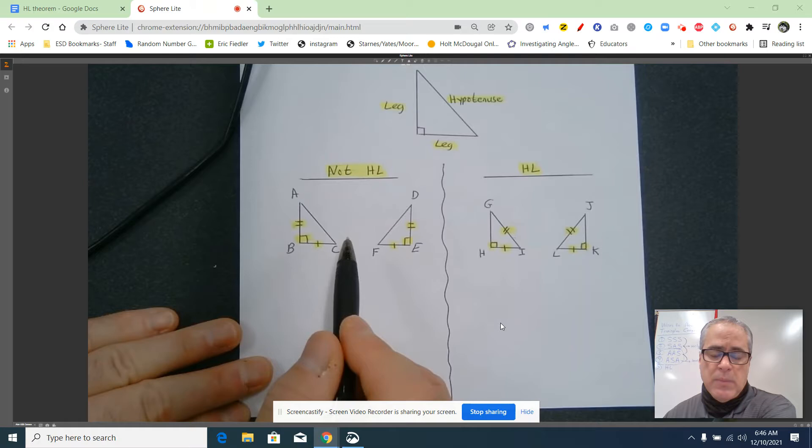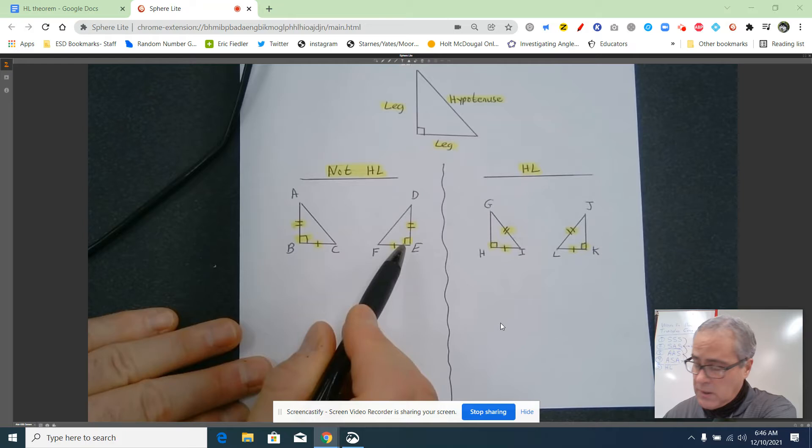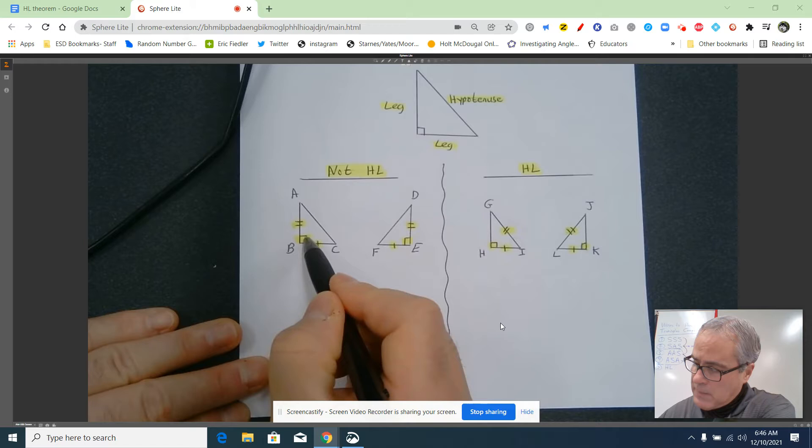On the left triangle, is it a right triangle? Yes, it is. Is the other one a right triangle? Yes. Are the hypotenuses of those two triangles congruent? The answer would be no, because if you look opposite the right angle, this side is not congruent to this side, or it's not marked that way.